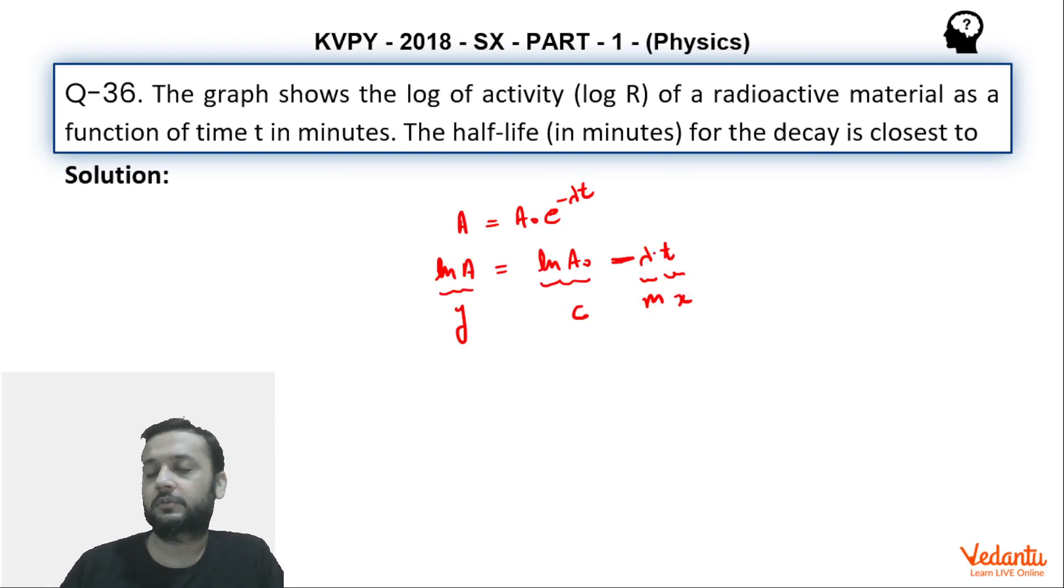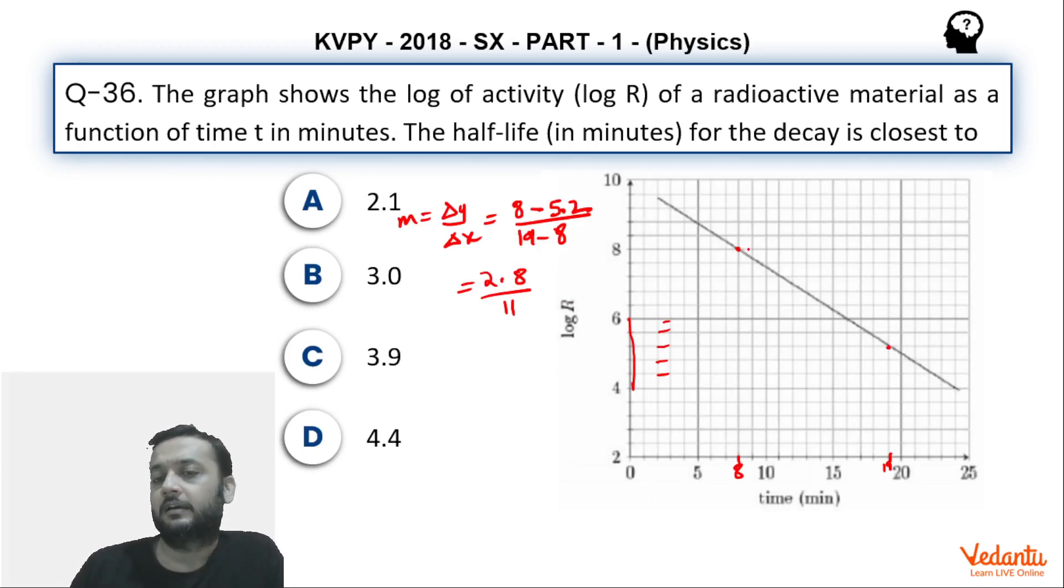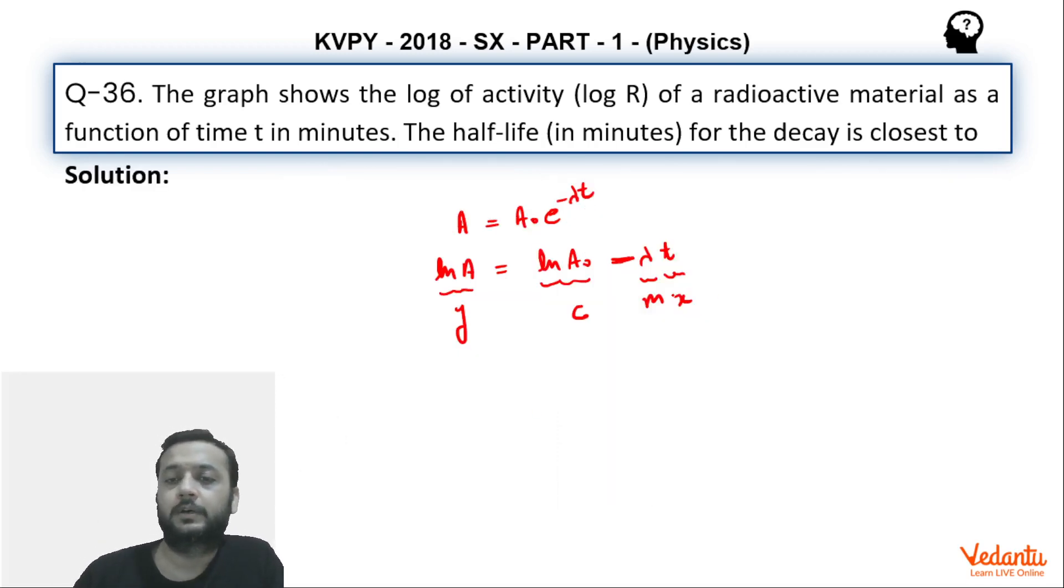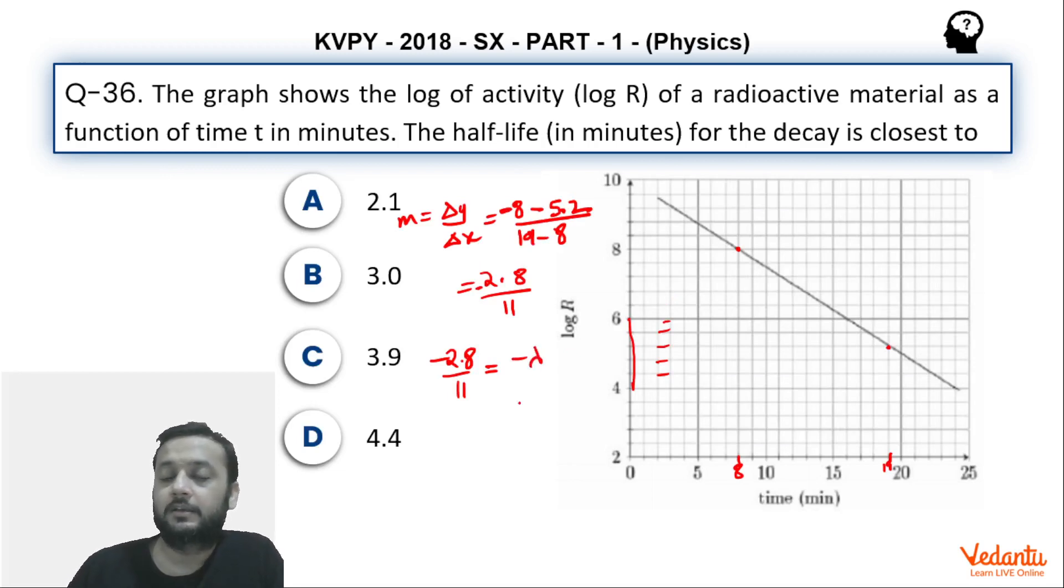Now, by the calculations that I have shown, we can say that this is minus lambda. And by the way, it should be negative also. Why it should be negative? Because y coordinate of this is 8. So correspondingly here, we will get 8. That means 8 will lie on this line. So I have written y2 minus y1 divided by x2 minus x1. So that's the reason one minus sign will also be here. So this will be actually negative. So minus 2.8 by 11. This should equal the slope m, which is equals to minus lambda. So from here, we can say that lambda is 2.8 upon 11. We have to find the answer in minutes as well, so we don't need to convert this into seconds.